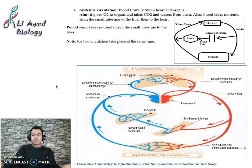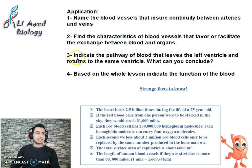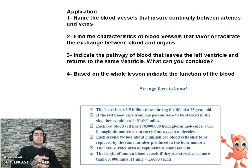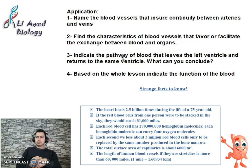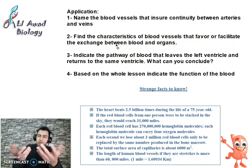Now, the blood circulation, the systemic circulation and pulmonary circulation, are very important to us. Without them there is no function of the heart and we cannot live. Let's solve these applications quickly. Name the blood vessels that ensure continuity between arteries and veins. What are the blood vessels that connect arterioles to veins or venules? Capillaries, sure. Find the characteristics of blood vessels that favor or facilitate the exchange between blood and organs. Capillaries have thin walls, and the blood moves slowly through them.